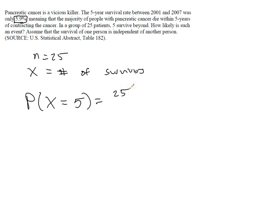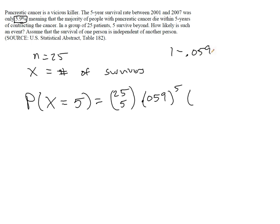That means out of 25 trials we have 5 successes. The probability of success is 0.059 raised to the 5th power, times the probability of failure — in this case people that do die — which would be the other 94.1%, so 0.941. That means the remaining 20 people do not make it.